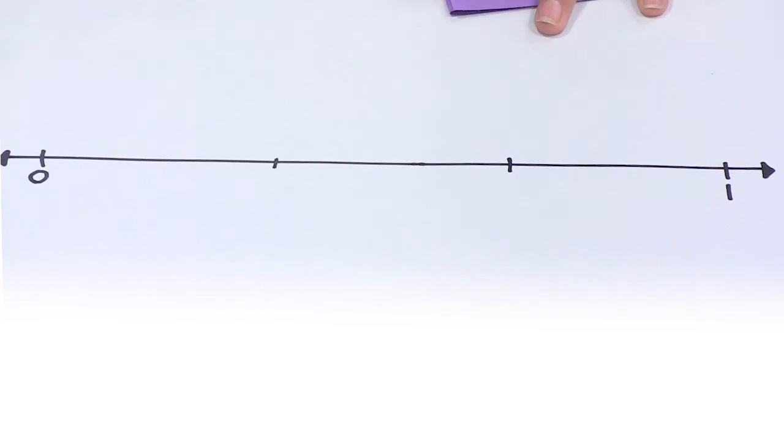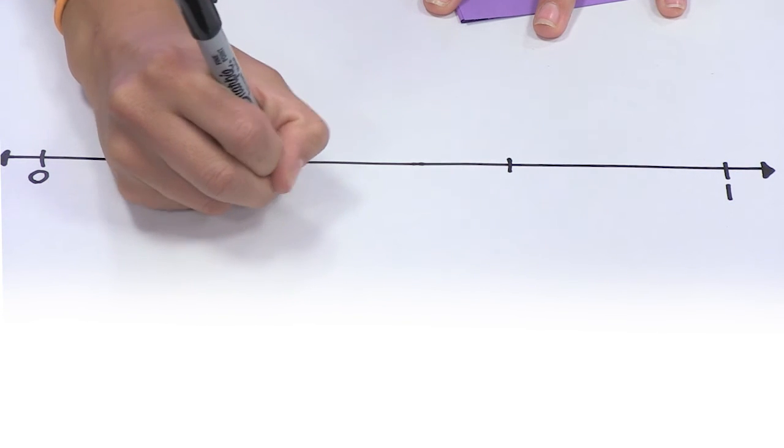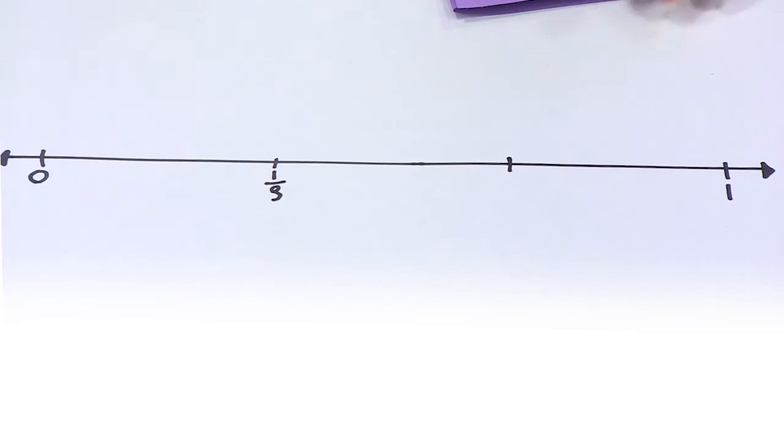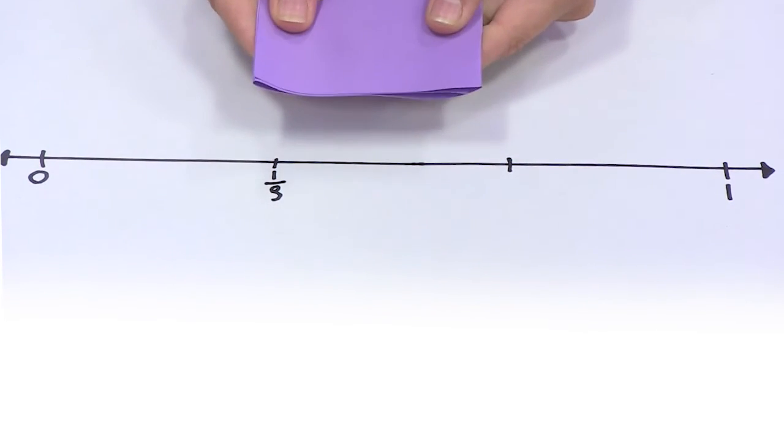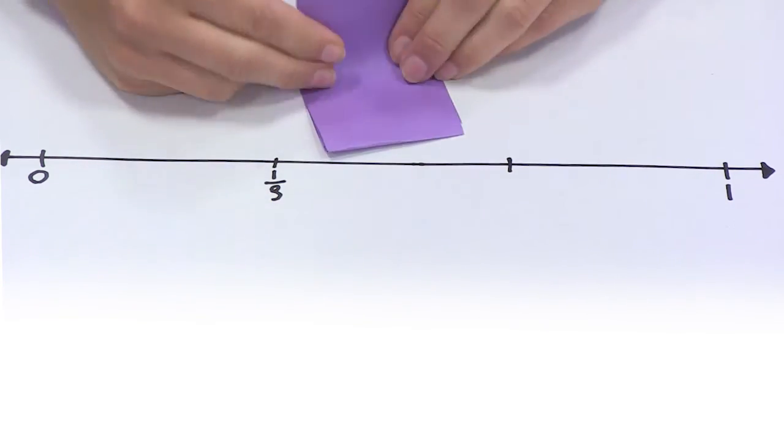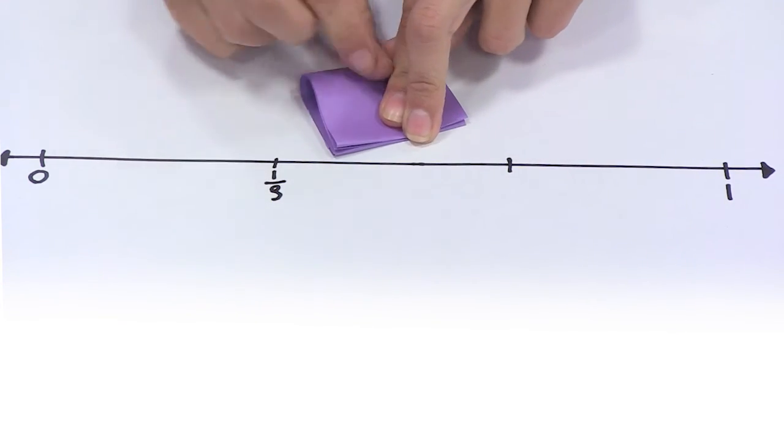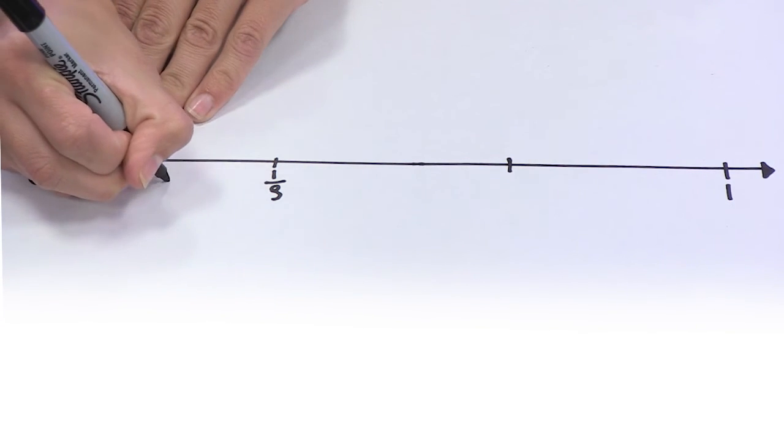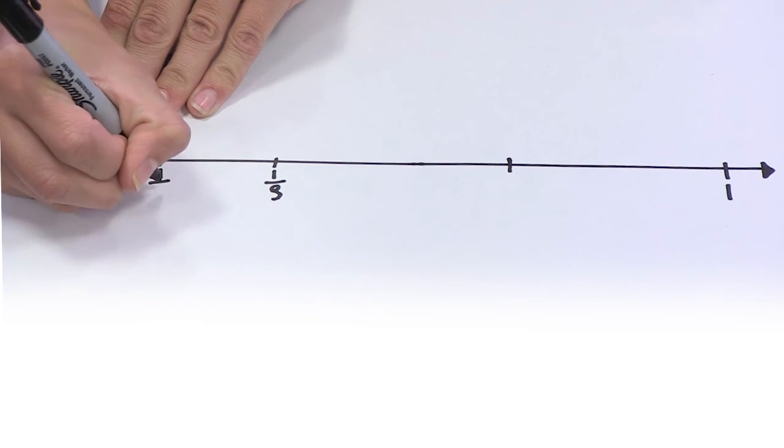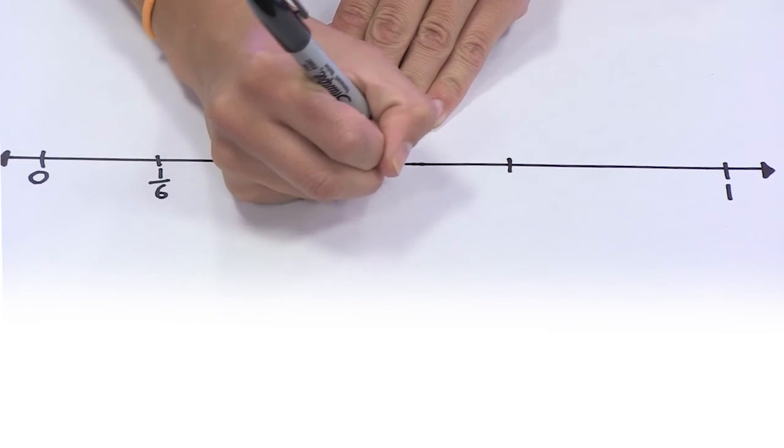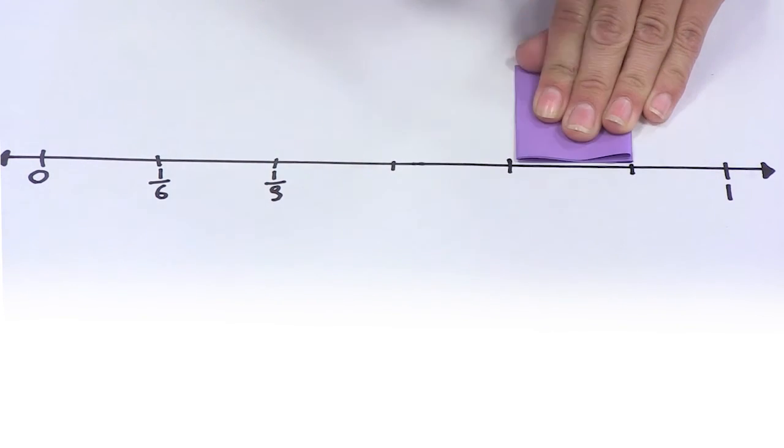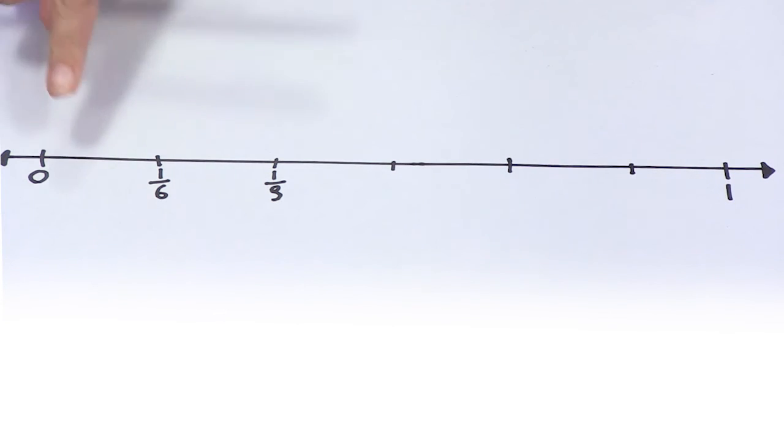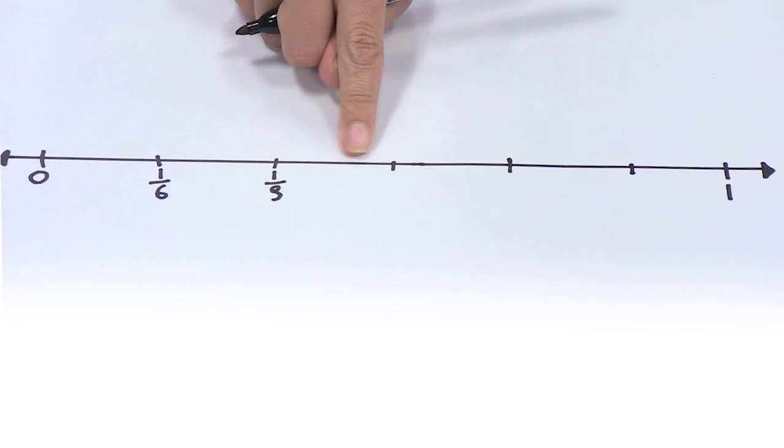I have now partitioned my number line into thirds. If I wanted to label sixths, I could take my thirds and fold it in half to partition my number line into sixths. I have now partitioned my number line into equal segments.